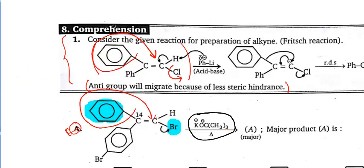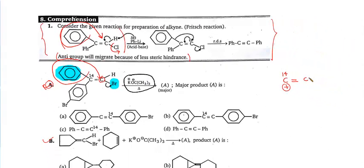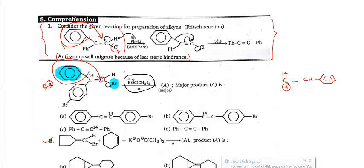If I draw the product: C double bond — this was C14, and when it leaves like this, a positive charge will be created above it. There will be no charge on this carbon because a leaving group is also attached to it. One is leaving and this one is coming here, so they join. The phenyl group comes in. Attach one final group and for the opposite position put Br.